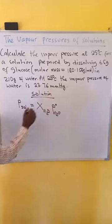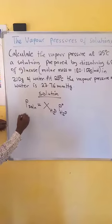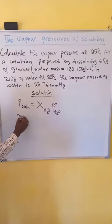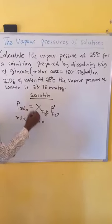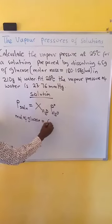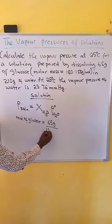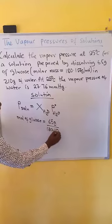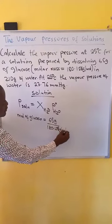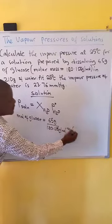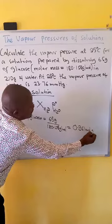So, first of all, we need to calculate the moles of the solute, which is glucose. Moles of glucose, which is equal to the mass of glucose, that is 65 grams, over 180.156 grams per mole. So, we divide, then we get 0.361 moles of glucose.